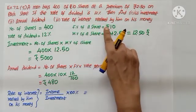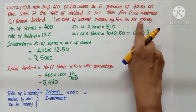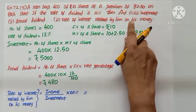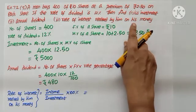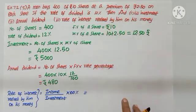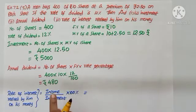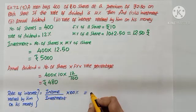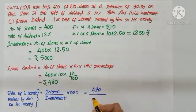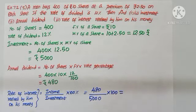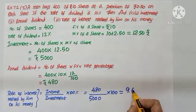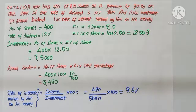Third part: rate of interest received by him on his money — that is return on the investment. Formula: income by investment into 100. Income is 480, investment is 5,000 into 100. Simplify. We get 9.6%.